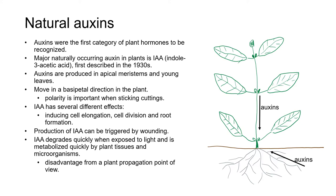Auxins were the first category of plant hormone to be recognized, back in the 1930s. The main naturally occurring auxin in plants is a compound called IAA, or indole acetic acid, which has several different roles in the plant including inducing cell elongation, cell division, and root formation. A second auxin called IBA, indole butyric acid, is also produced in plants but in smaller amounts than IAA.